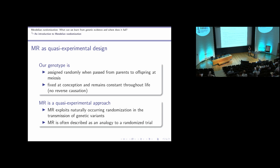MR can be seen as a quasi-experimental approach, exploiting naturally occurring randomization in the transmission of genetic variants. Because of this, MR is often seen as an analogy to a randomized trial. In a randomized trial we randomize participants to placebo or drug arms; in MR, we have random allocation of alleles at meiosis that predicts our exposure of interest.